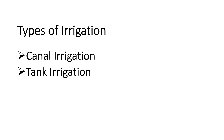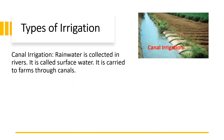Types of irrigation are canal irrigation and tank irrigation. Rainwater is collected in rivers — this is called surface water. It is carried to farms through canals, so this is called canal irrigation.